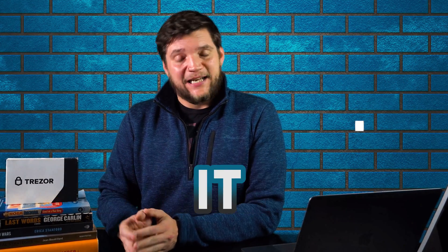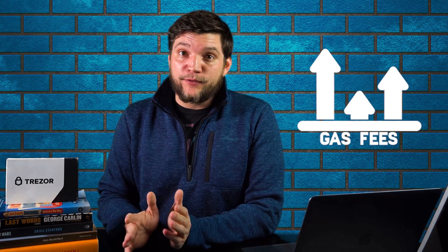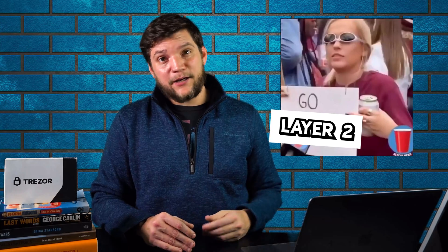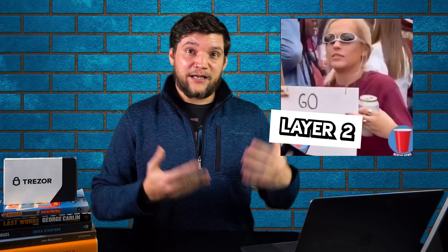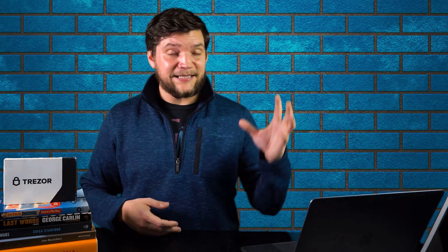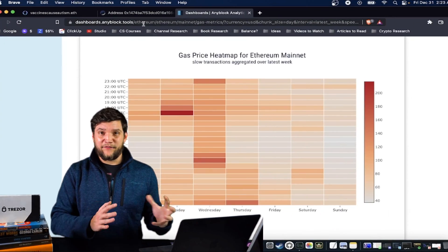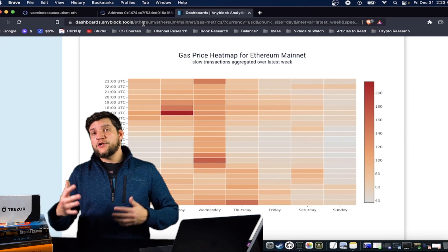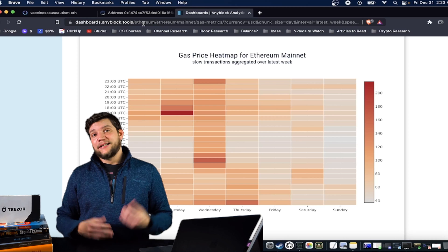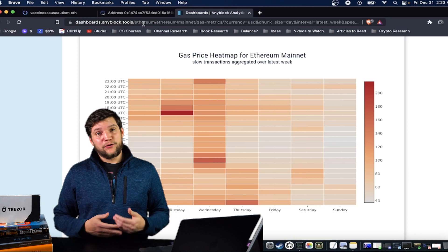My first hack for ENS domain registration is it's really important to time when you're registering it. Gas fees are generally very high. This is not something you can do on a layer two, although they're talking about moving it to layer twos eventually, especially subdomain registration. This is a foundational service of Ethereum layer one, so these might just stay expensive forever. There are times when gas fees are lower than others — typically Sunday nights and Monday morning, like 1am or 2am. I'll link analytics tools in the description so you can see when the lowest gas fees are generally going to be. But again, it's going to be expensive.